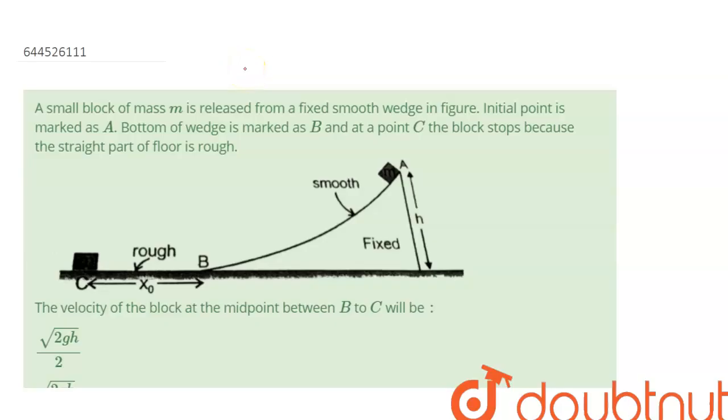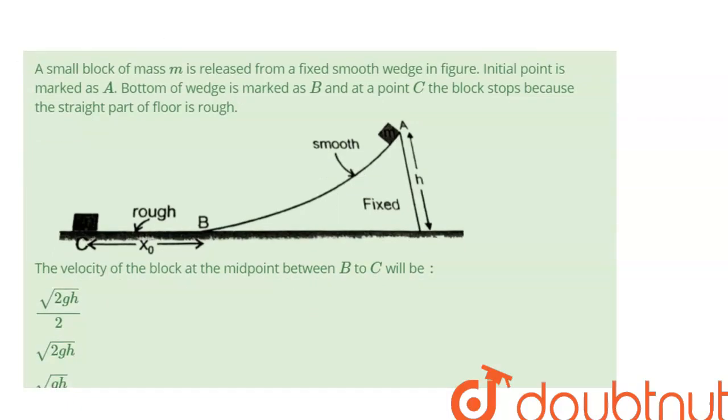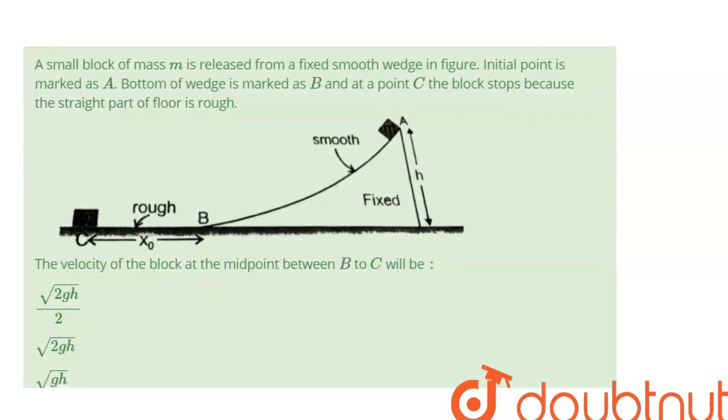A block of mass M is released from a fixed smooth wedge in figure. Initial point is marked as A, bottom of wedge is marked as B, and at point C the block stops because the straight part of floor is rough. We have to find the velocity of the block at the midpoint between B to C.